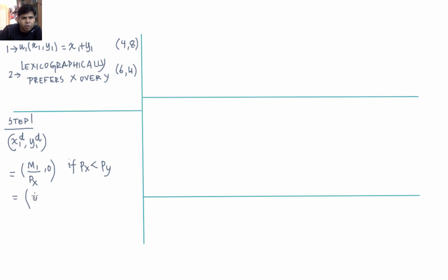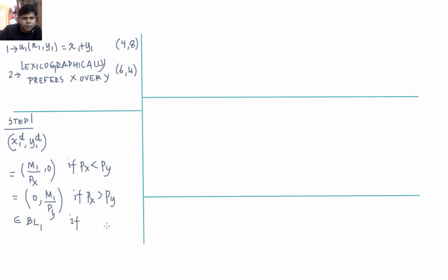He is going to spend all his money on commodity y if commodity y is cheaper. And if px equals py — both prices are the same — then he is indifferent between choosing any point on the budget line. So he can pick anything on the budget line of individual 1 if px equals py.